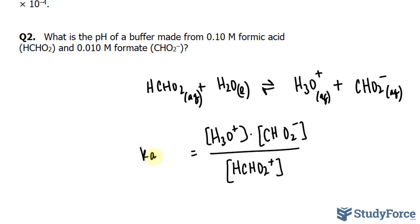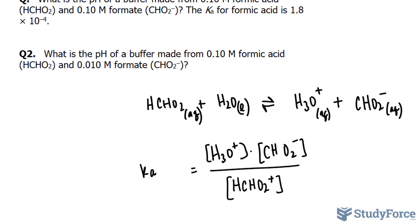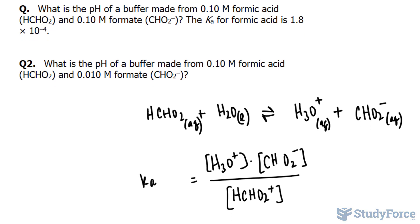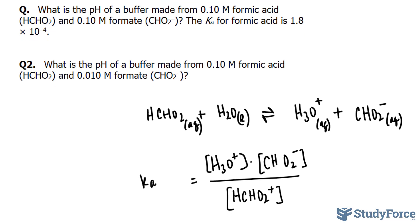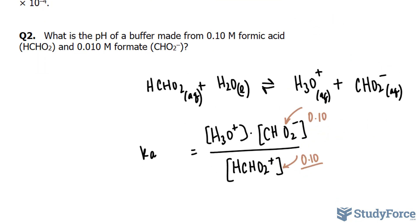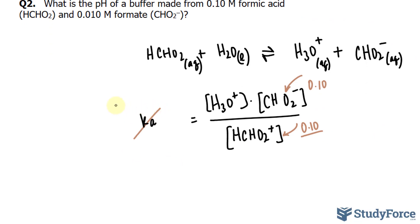We can start to fill this out. We're told that the concentration of formic acid, this one, is 0.10. That's two significant figures. And the concentration of formate, this ion, is 0.10. And Ka is 1.8 times 10 to the power of negative 4.